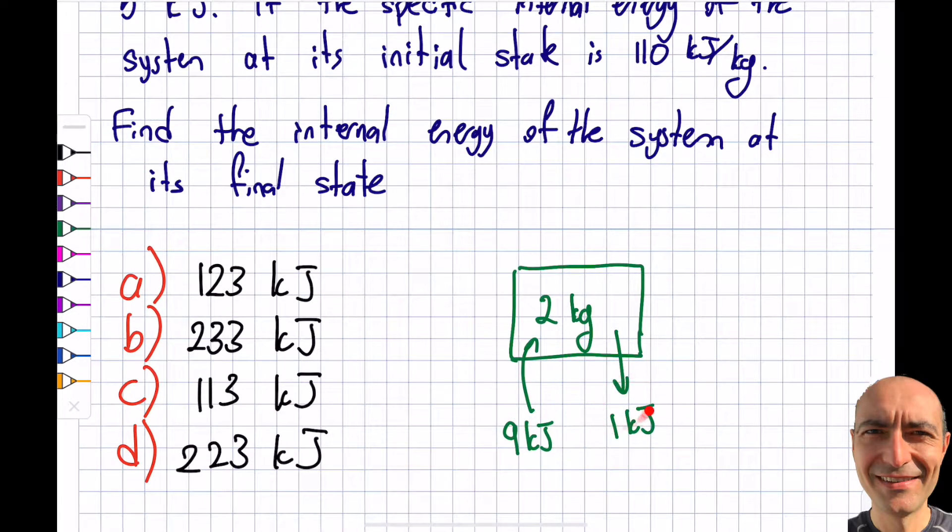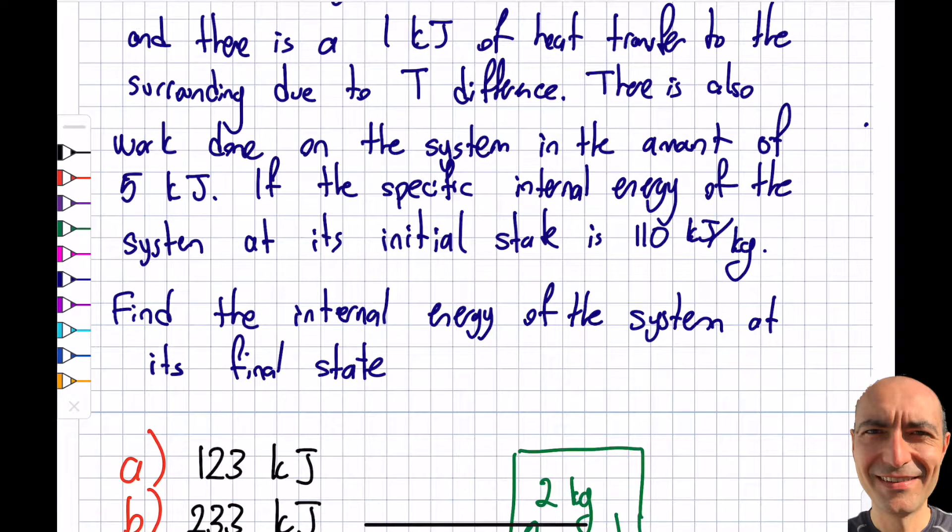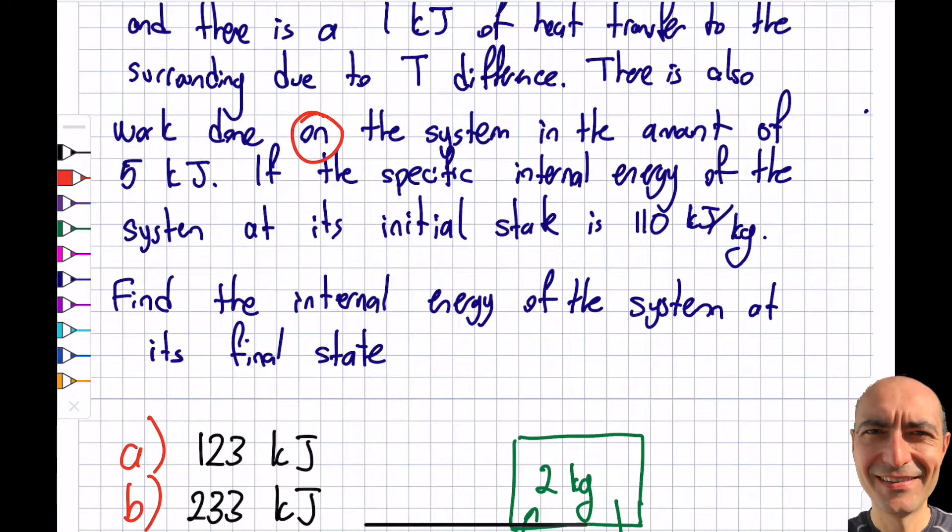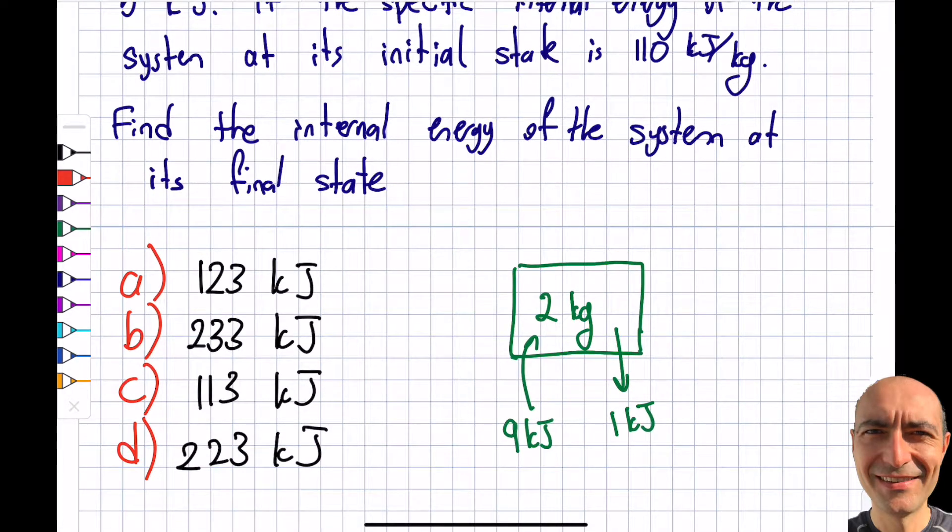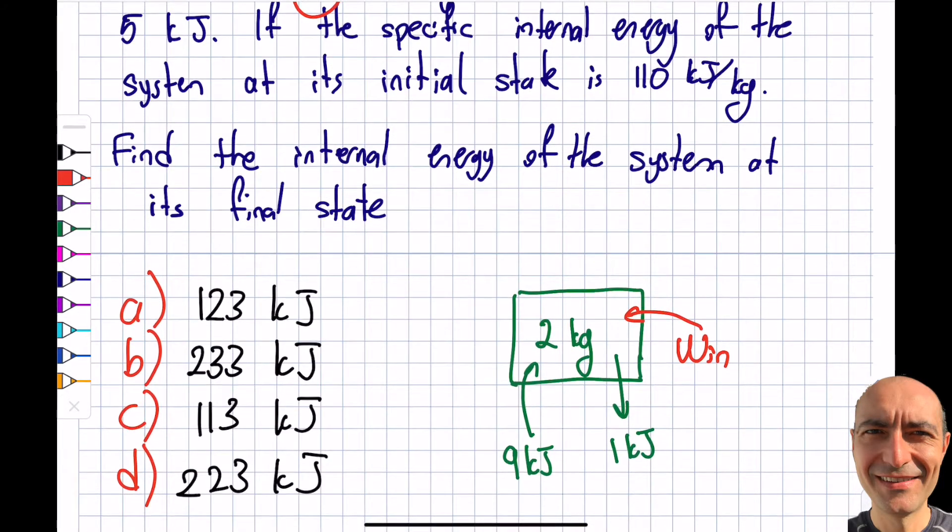Do we know where this is coming from or where this is going? Not really, but it doesn't matter. There is also work done on the system. If it says on the system, it means work in, so this is work in in the amount of 5 kilojoules.